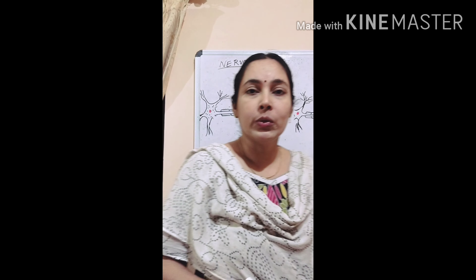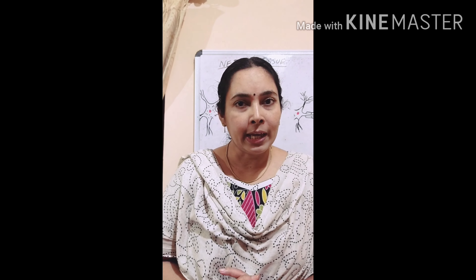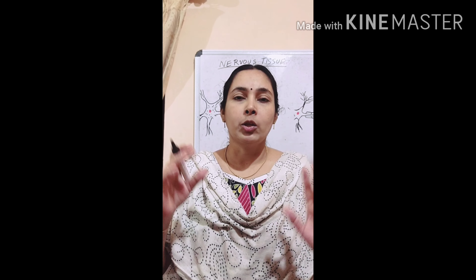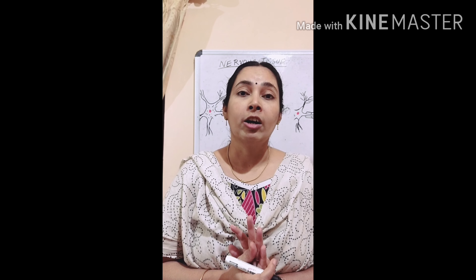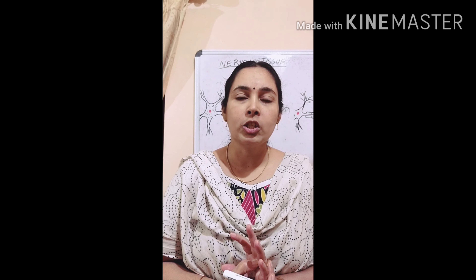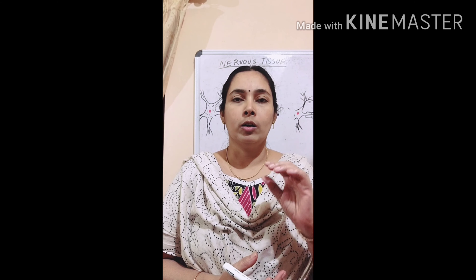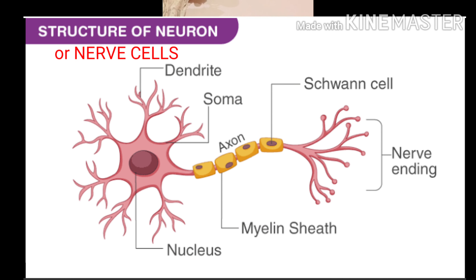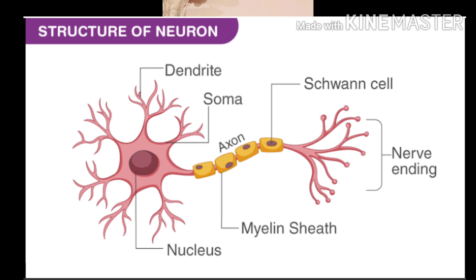Nervous tissue — our brain, spinal cord, and nerves together form our nervous system. The cells in this nervous tissue are called nerves or neurons.